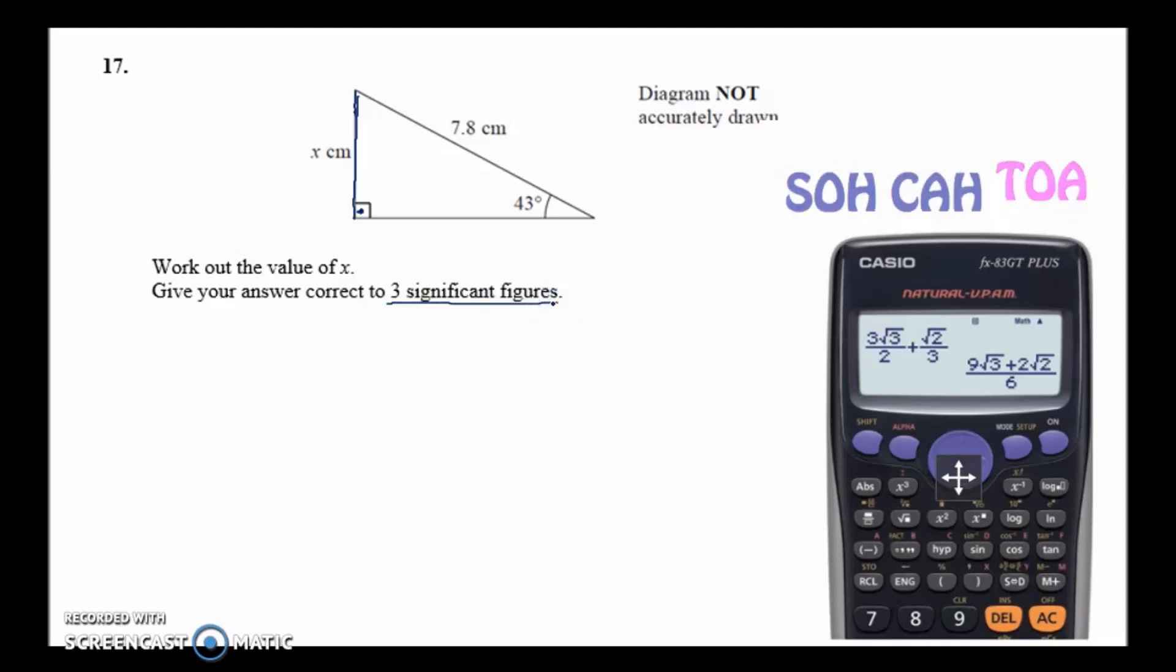We've got an angle, so whenever an angle is involved we're going to be thinking about SOH CAH TOA - trigonometry. It's our trigonometry type of question: SOH CAH TOA.